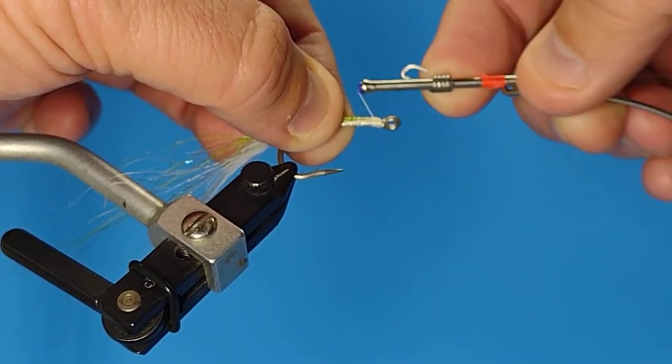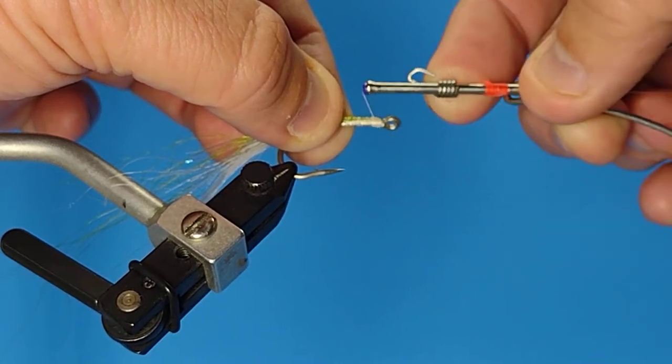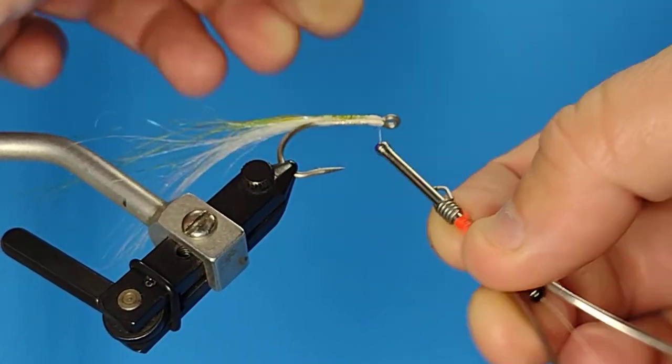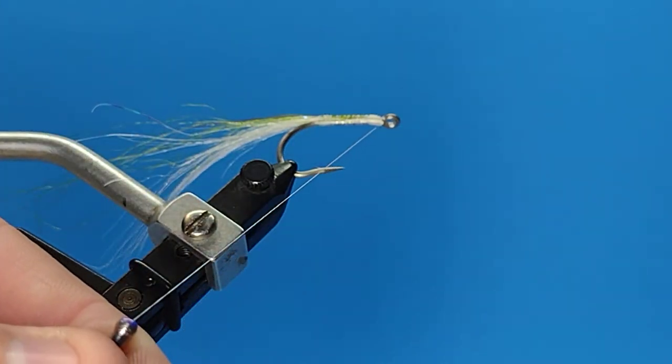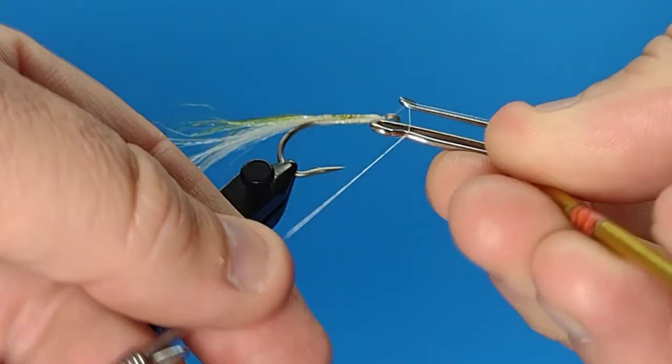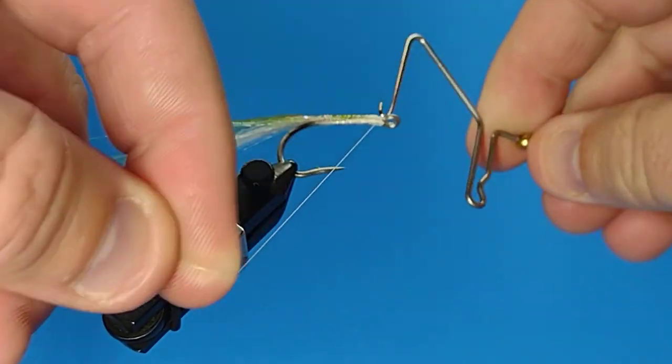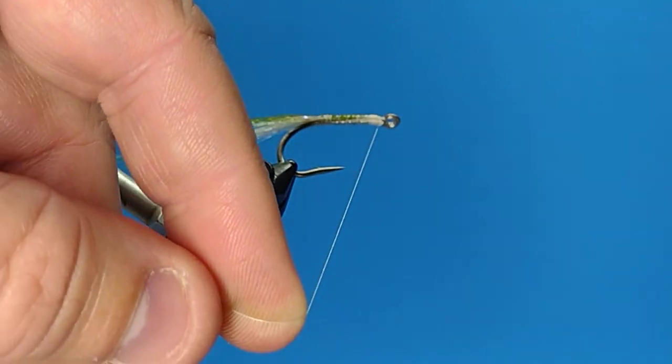So we'll start that on the underside real quick. Now we're going to do a whip finish. Now we're going to cut off that thread. At this point we can cut off that thread.